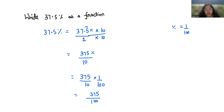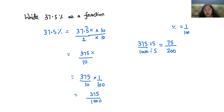So it comes in fraction form but we are going to reduce it. 375 by 1000 — I am going to divide both numerator and denominator by 5. That gives us 75 by 200. Now again I can reduce it more by dividing by 5, which gives us 15 and 40.